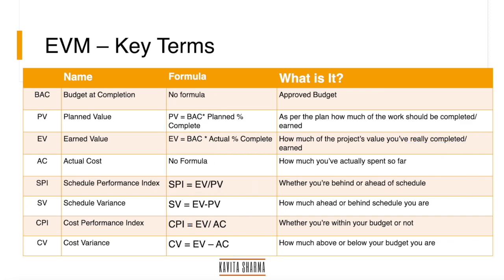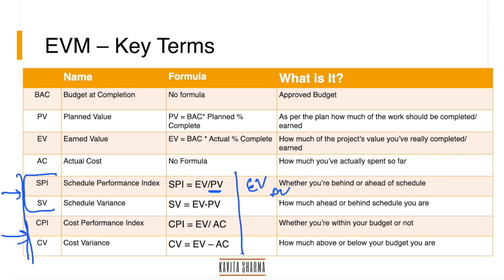To remember the formulas: EV always comes first. When dealing with schedule, pair EV with PV. When dealing with cost (CPI or CV), pair EV with AC. When you see 'index,' use division; when you see 'variance,' use subtraction. So: SPI = EV ÷ PV, SV = EV − PV, CPI = EV ÷ AC, CV = EV − AC.